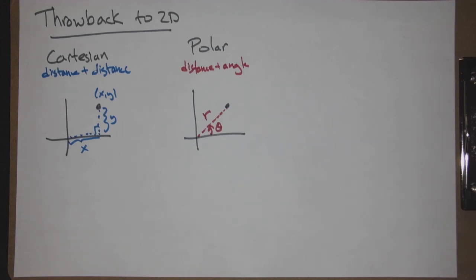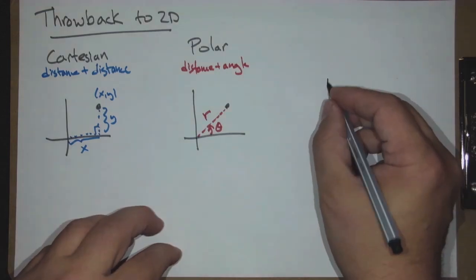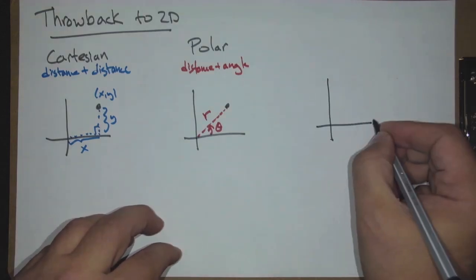Which one is the right coordinate system? The answer is whichever one you're most comfortable with, and it often depends on the problem. We're very comfortable with Cartesian, but both have their place. The question is: both describe space, but can we go back and forth? Yes, you can.